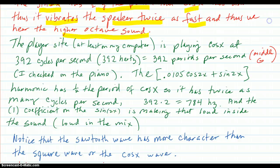So a little bit of digging into the details. The player's sight, at least the way it's sounding on my computer, is playing cosine x at 392 cycles per second. So that's 392 periods per second. So you just take that fundamental period, negative pi to pi, and you're copying and pasting that. And you're playing that through the speaker 392 times per second. That's why you hear a pitch.